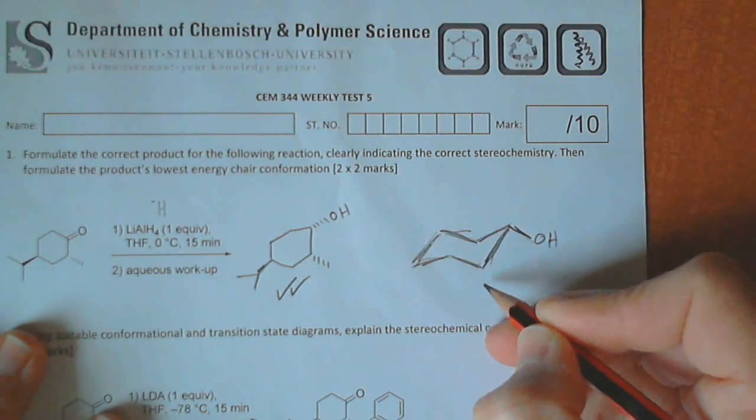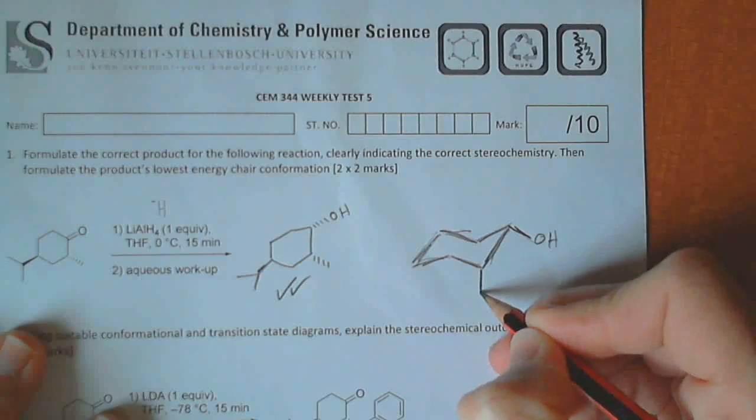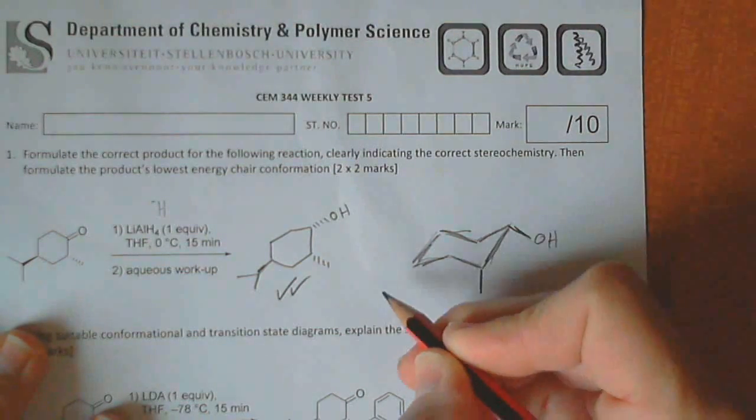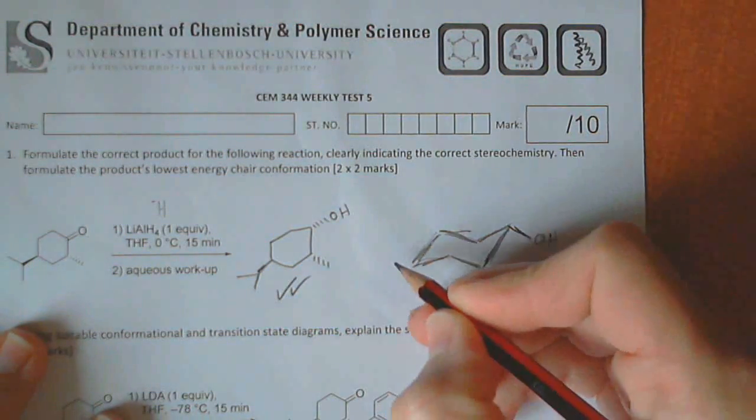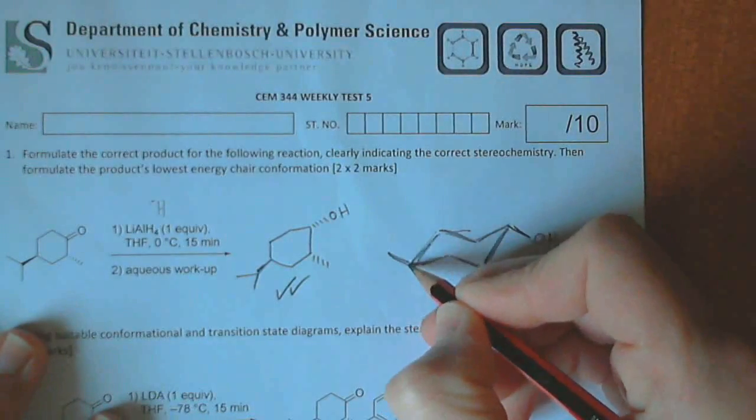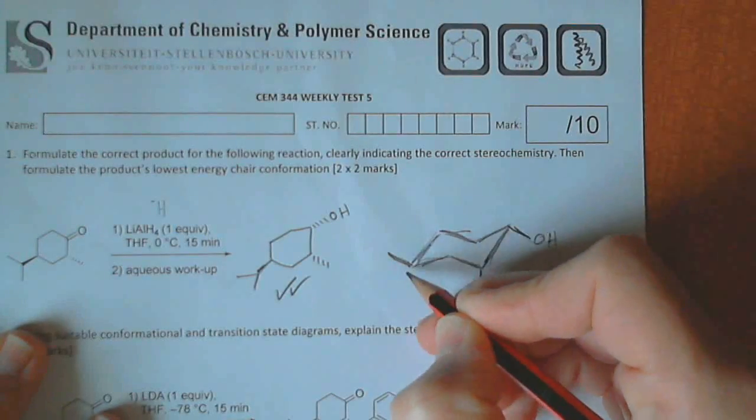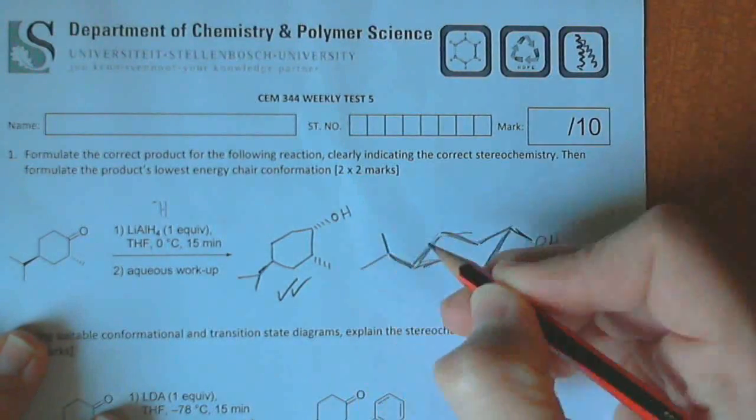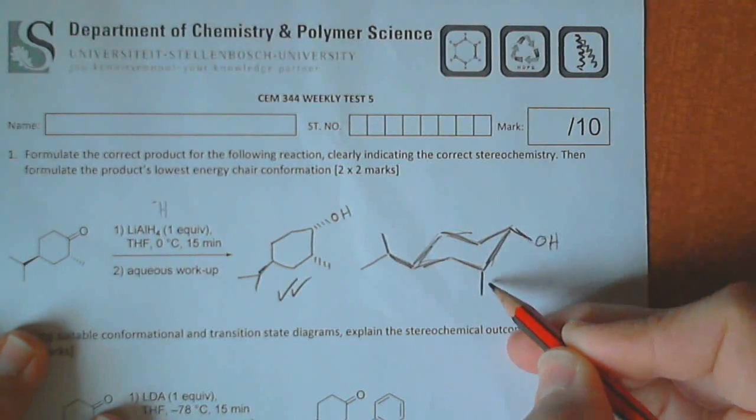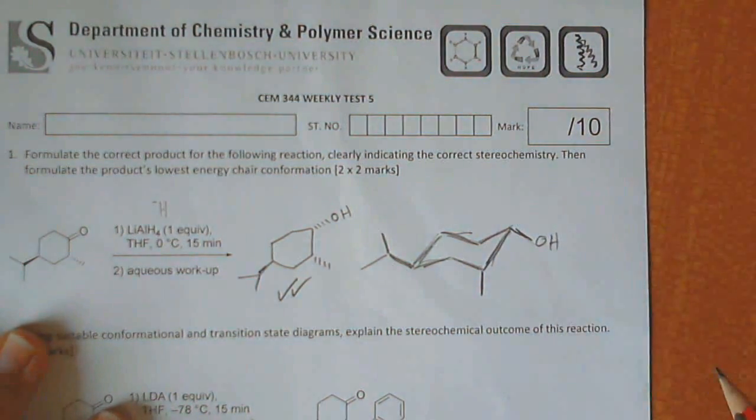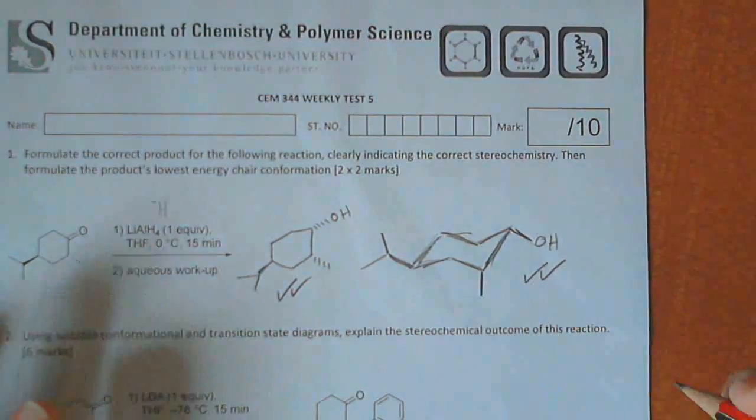The OH is going to be in an equatorial position, which is parallel to these lines. The methyl group over there is down, so it has to be axial. And the isopropyl group is up, which is equatorial, because it is parallel to these lines over there. And so none of these are wedges or dashes, but just as they are over there, and you would have got two marks for that.